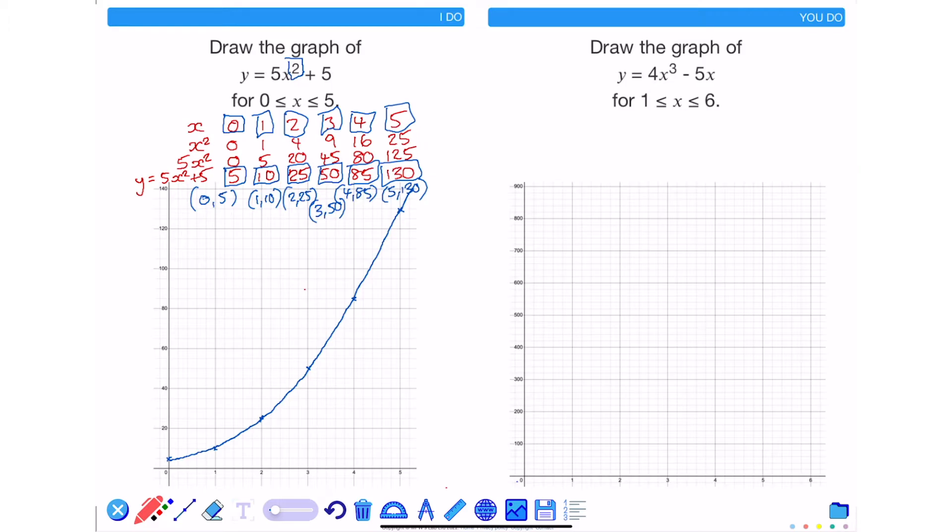So like with the example on the left hand side I am going to first create a table of values, but this time x needs to be between 1, 2, 3, 4, 5 and 6. To create y, I need to do 4x cubed and then take away 5 lots of x. So to begin, find x cubed.